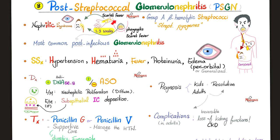We also talked about post-streptococcal glomerulonephritis. After the throat infection, give it one to three weeks and before you know it, there is blood in the urine. Or after scarlet fever or pyoderma (skin infection), you can also get kidney disease. Symptoms include hypertension, hematuria, fever, proteinuria, periorbital edema — this is a nephritic syndrome for the most part.